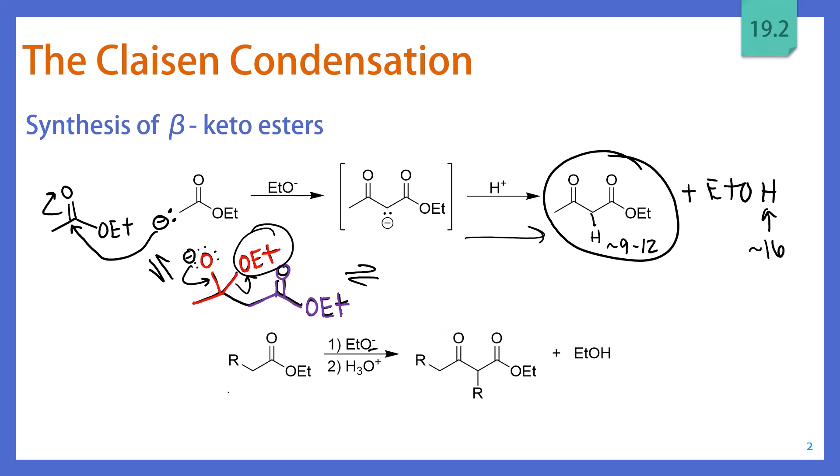So a general format for the Claisen condensation is you will have an ester, which may have a much longer R group than the one that we looked at a second ago. You add in the matching alkoxide and you end up creating a beta-ketoester. One of the most common mistakes in this type of reaction is that students tend to lose or gain carbons. So you need to keep track of your R groups and your product is always going to contain a beta-ketoester.